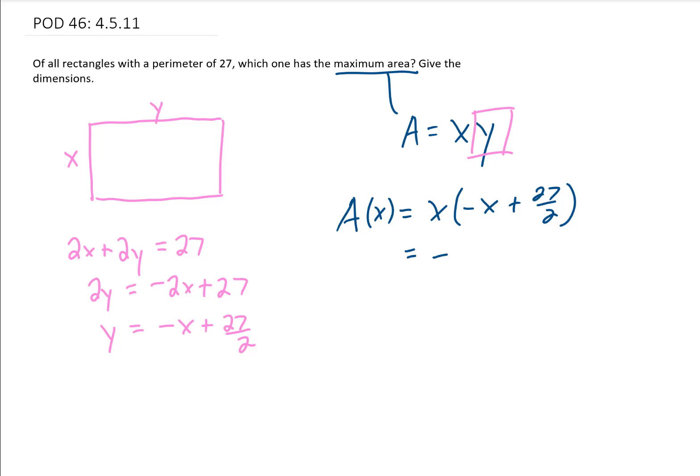If we want to simplify this a little bit, it's negative x squared plus 27 halves x. And it is our job to maximize this area function.